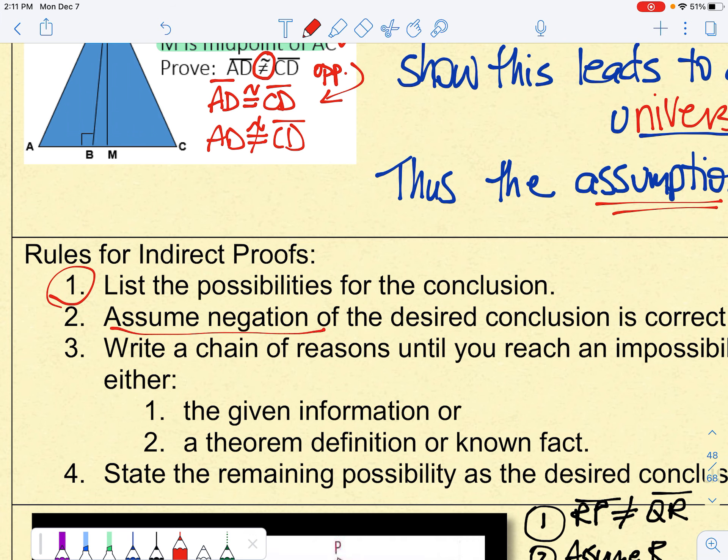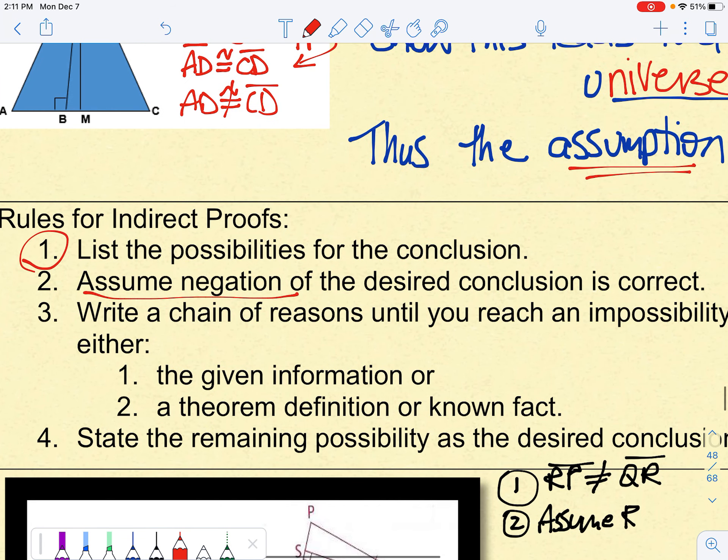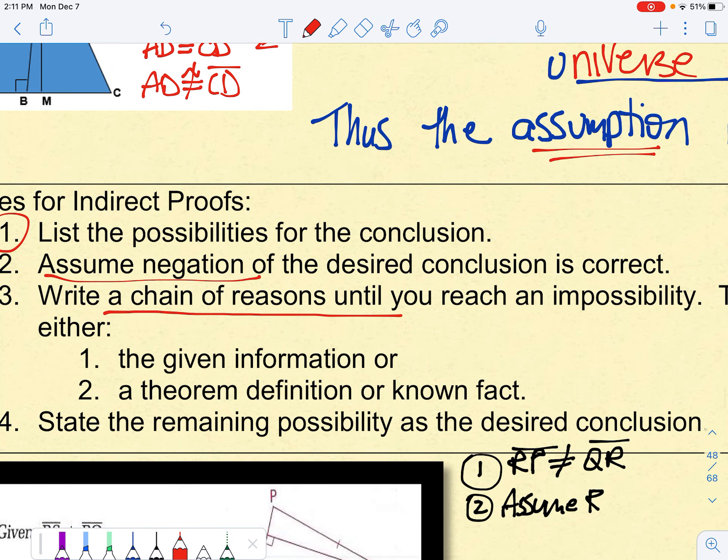Then we assume the negation of the desired conclusion. You use chain of reasoning until you reach an impossibility. And that impossibility can be that you negate the given information, or you negate some sort of theorem, definition, or known fact.